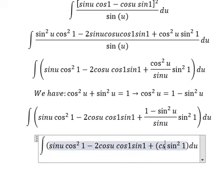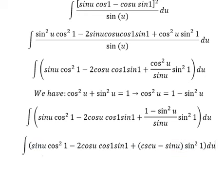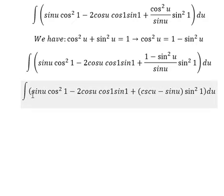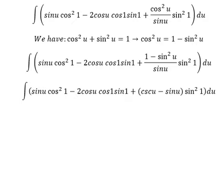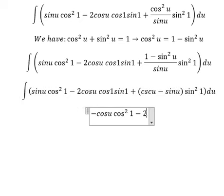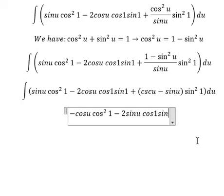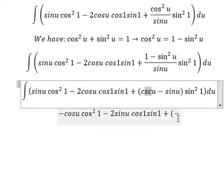So we have cosecant(u) minus sine(u). Now we have the final answer. The integration of sine(u) is negative cosine(u), and this one is sine(u).